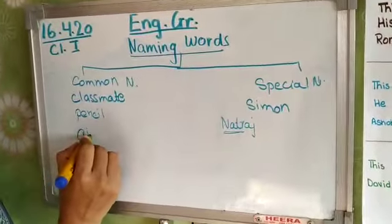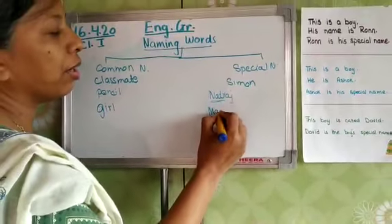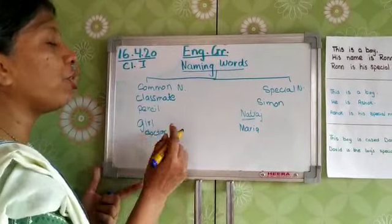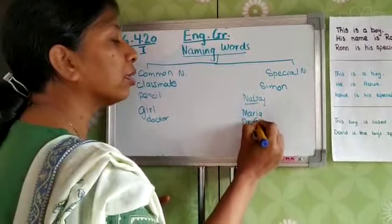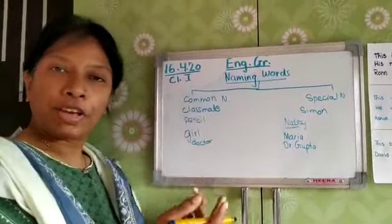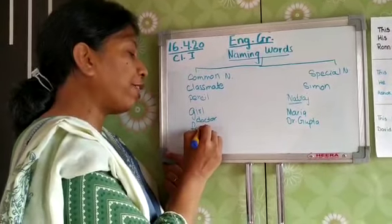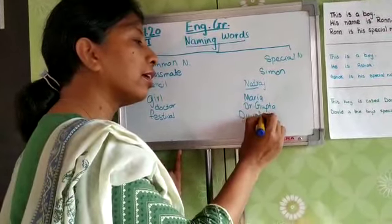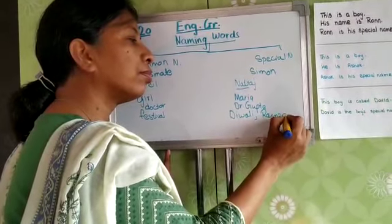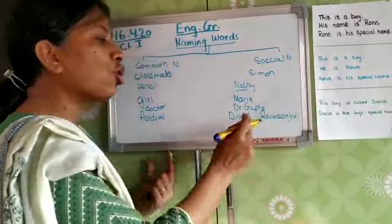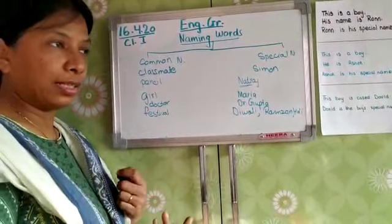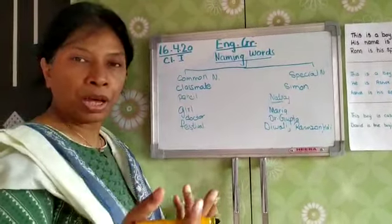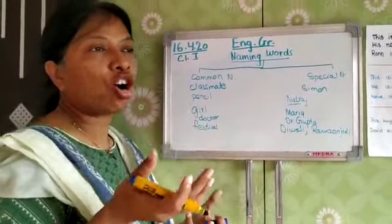As I told you — girl, take it as Maria. Then doctor is the common name; we don't know which doctor, but a special name given would be Dr. Gupta. Like festivals — we don't know which festival. If we name it, special names like Diwali, Ramzan, Holi — these are all special names. Similarly, buildings — we don't know which building, but Qutub Minar and Char Minar — these are all special names.